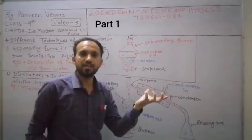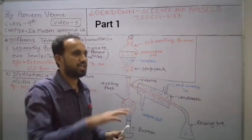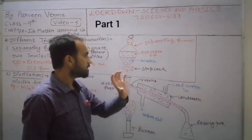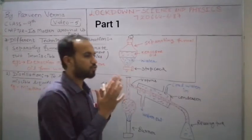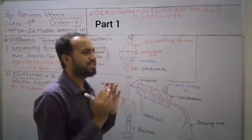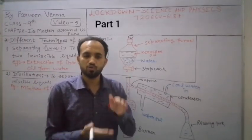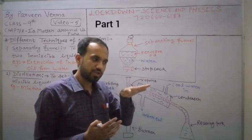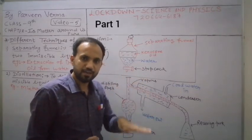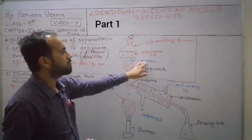We add the two liquids that we need to separate into the funnel and mix them well by stirring so they mix thoroughly. Then we keep the separating funnel undisturbed for some time so it doesn't move. Gradually, the liquid with higher density will settle down at the bottom, while the liquid with lower density will stay on top.